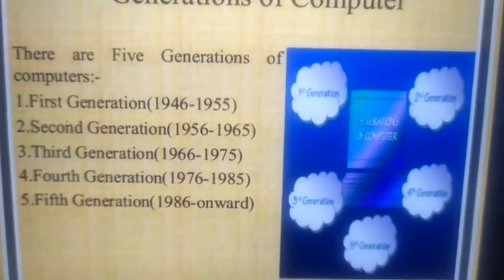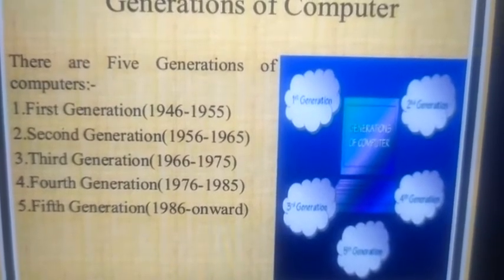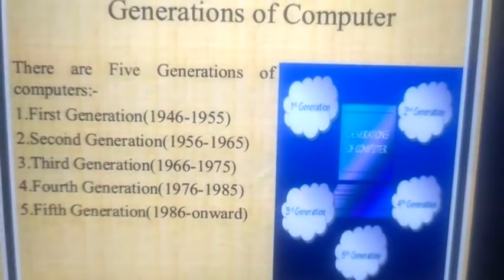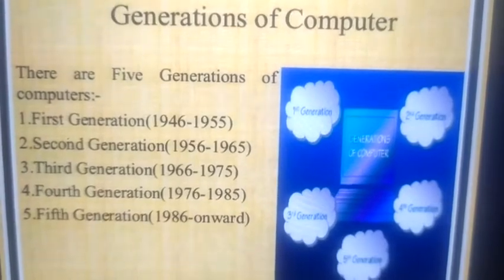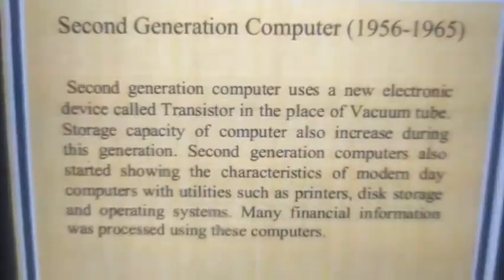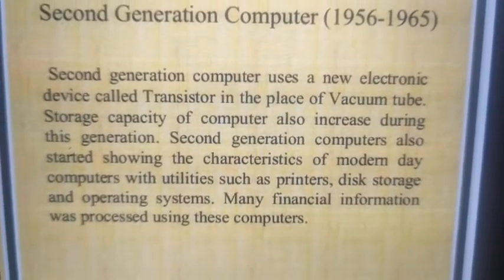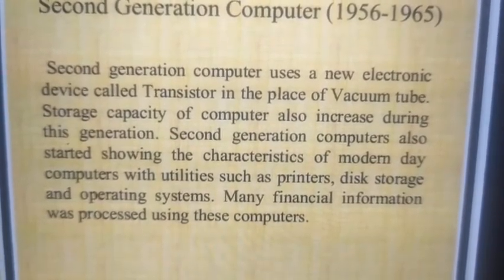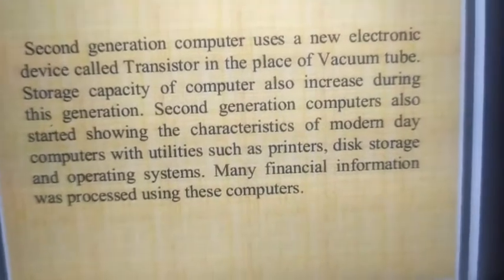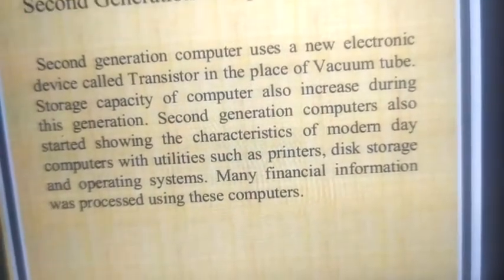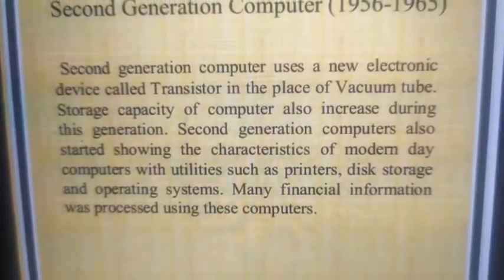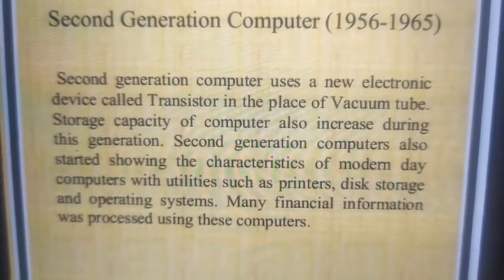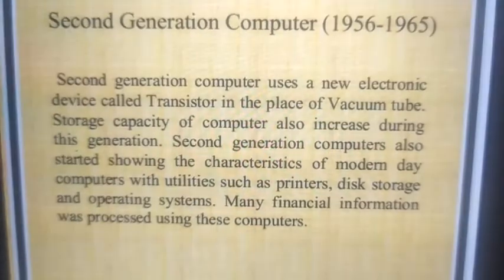The second generation of computer is from 1956 to 1965 and the third generation is 1966 to 1975. The second generation computer uses a new electronic device called the transistor in place of vacuum tubes. This generation also started showing the characteristics of modern day computers with utilities such as printers, disk storage, and operating systems. So in the second generation, transistors were used, but in the first generation, vacuum tubes were used.